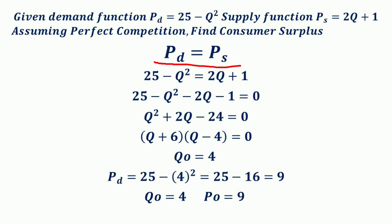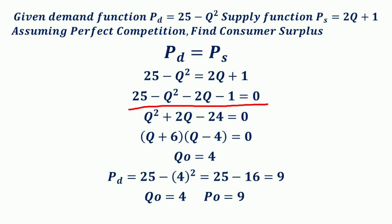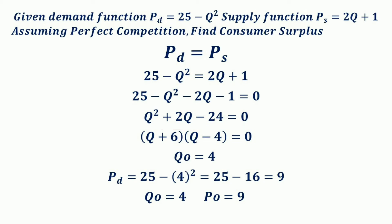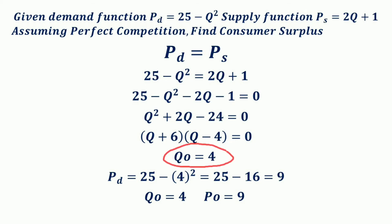Under perfect competition, equilibrium is determined when demand equals supply, so 25 minus Q² equals 2Q plus 1. Taking all values to the left-hand side gives Q² plus 2Q minus 24 equals 0. Using the factorization method, this becomes (Q plus 6)(Q minus 4) equals 0, giving Q = minus 6 or Q = 4. Since negative quantity is not valid, we take Q₀ = 4.